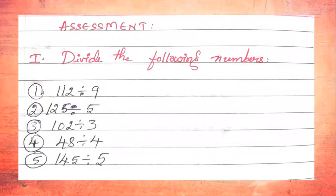Based on the exercise, an assessment is given. Solve the exercise problems and the following assessment questions — divide the following numbers: (1) 112 ÷ 9, (2) 125 ÷ 5, (3) 102 ÷ 3, (4) 48 ÷ 4, (5) 145 ÷ 5. Go through the exercise, solve the problems, and practice. We will continue with the next unit in the next video. Thank you.